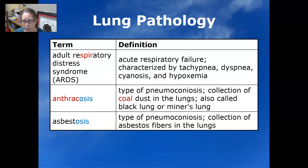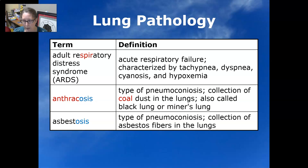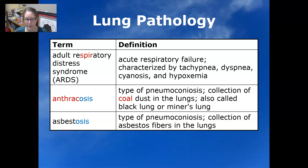Anthracosis is a type of pneumoconiosis — 'conio' means dust, 'pneumo' means lungs, and 'anthraco' means coal dust. It is a collection of coal dust in the lungs, also called black lung or coal miner's lung. Asbestosis is another type of pneumoconiosis involving the collection of asbestos fibers in the lungs, which can also lead to cancers.